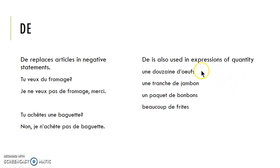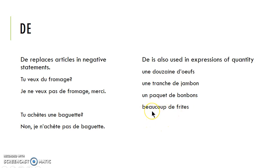De is also used in many expressions of quantity — une dizaine de, une tranche de jambon, un paquet de bonbons, for example. And another one: beaucoup de frites. So if you like to eat a lot of fries with your hamburger, you'll want to know beaucoup de. Anytime you use beaucoup to say 'a lot of something' followed by a noun, you always need de before that noun, whatever it is.